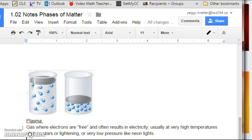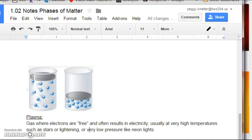So, under plasma, plasma is a gas where electrons are free and often results in electricity. Usually, this is at crazy hot temperatures, like the stars or lightning. Or, when we're talking about the neon lights, that's because it's a very low pressure. And that's something, if you're interested in right now, let me know. We can talk some more about it. But for now, we're going to not talk about the pressure aspect of it. And you can just remember that the electrons are going crazy, which will result in some electricity, and usually at very high temperatures. For example, stars or lightning.